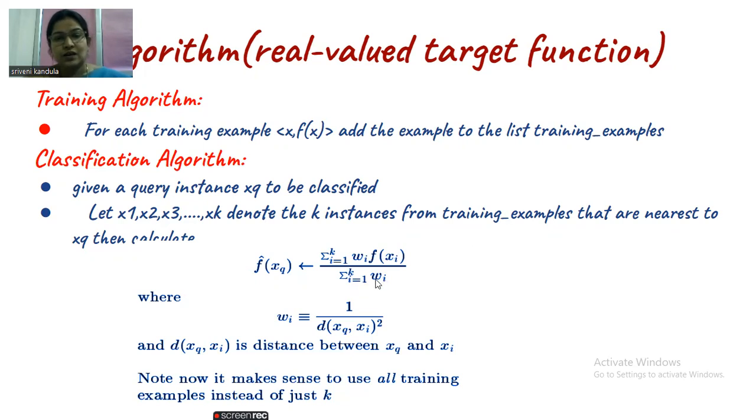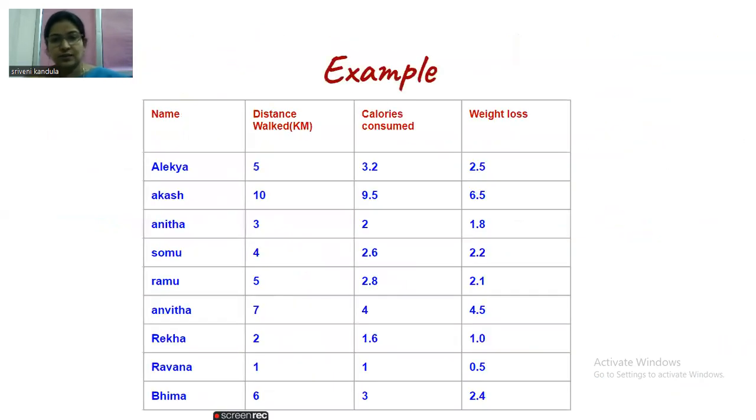That should be divided with sigma wi value. So where calculation of w is similar to the last problem, which is 1 by distance squared. So here we are considering all the training examples instead of taking a simple one. And here also we will be observing two cases that I will be telling you at the end of the example.